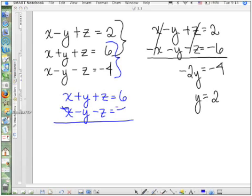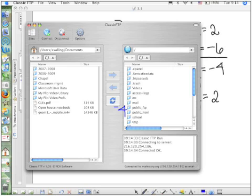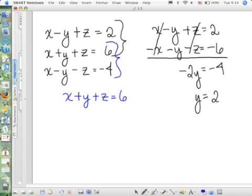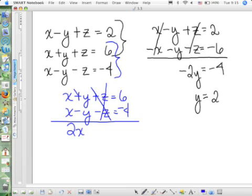And I have X minus Y minus Z equals negative 4. Well, when my Zs go away, I have 2X. Oh, look. Now I got rid of Y also. Okay. That's convenient. Equals 2. So X equals 1.